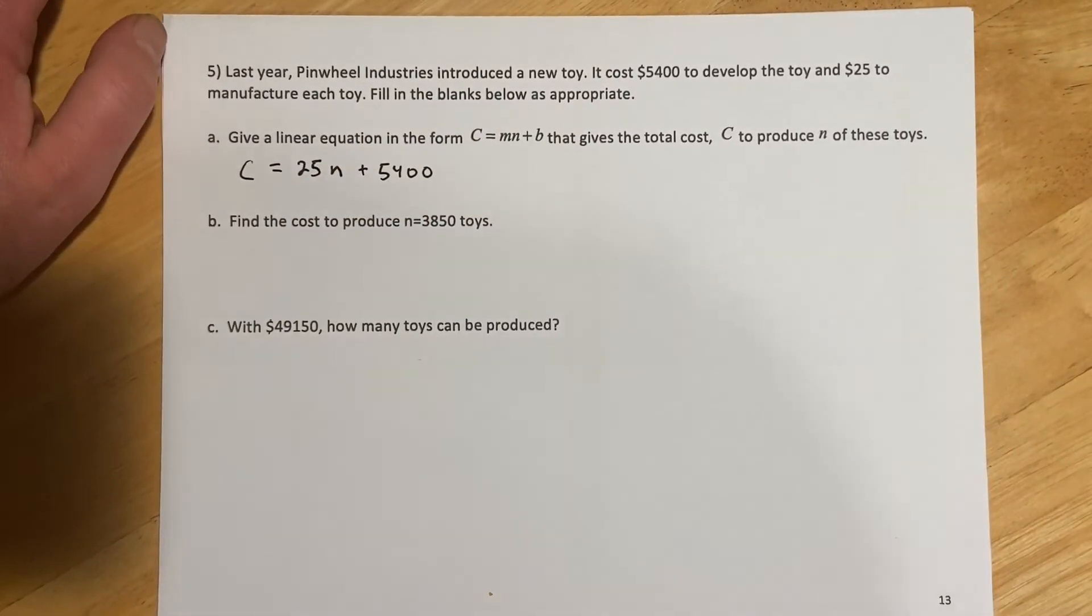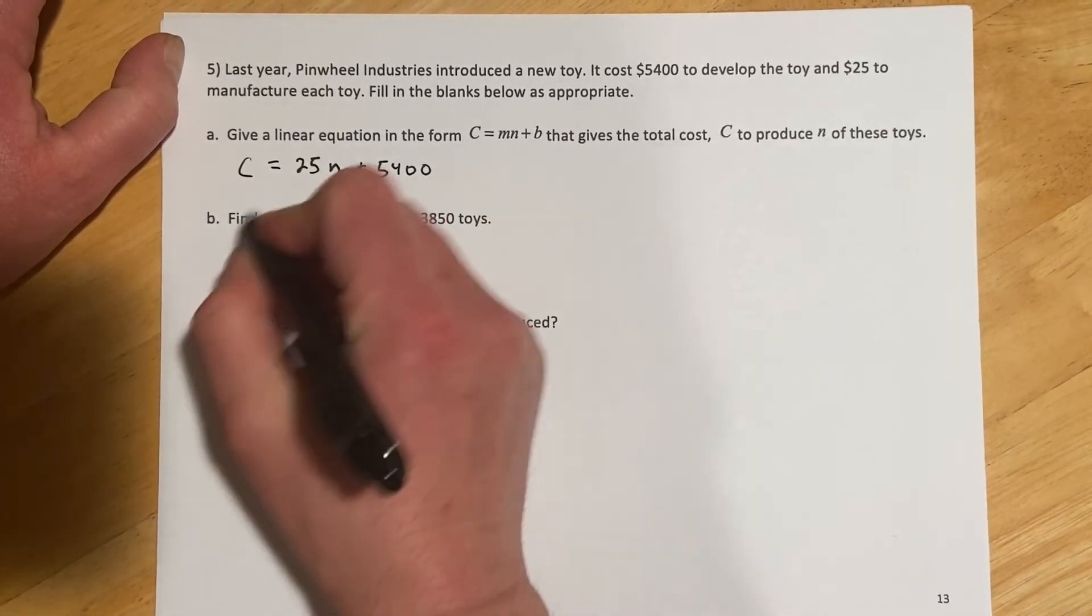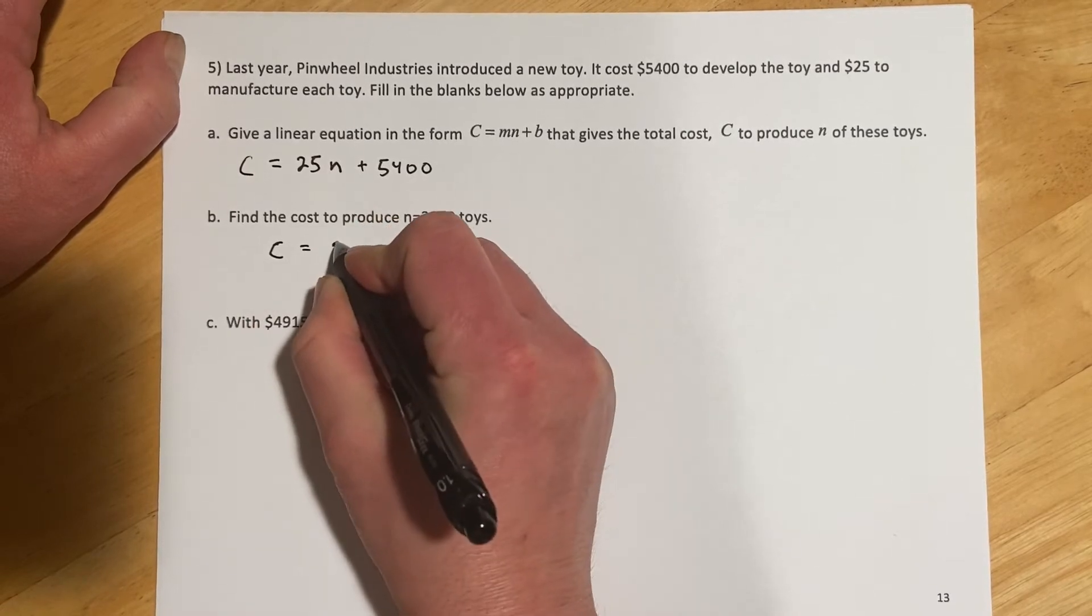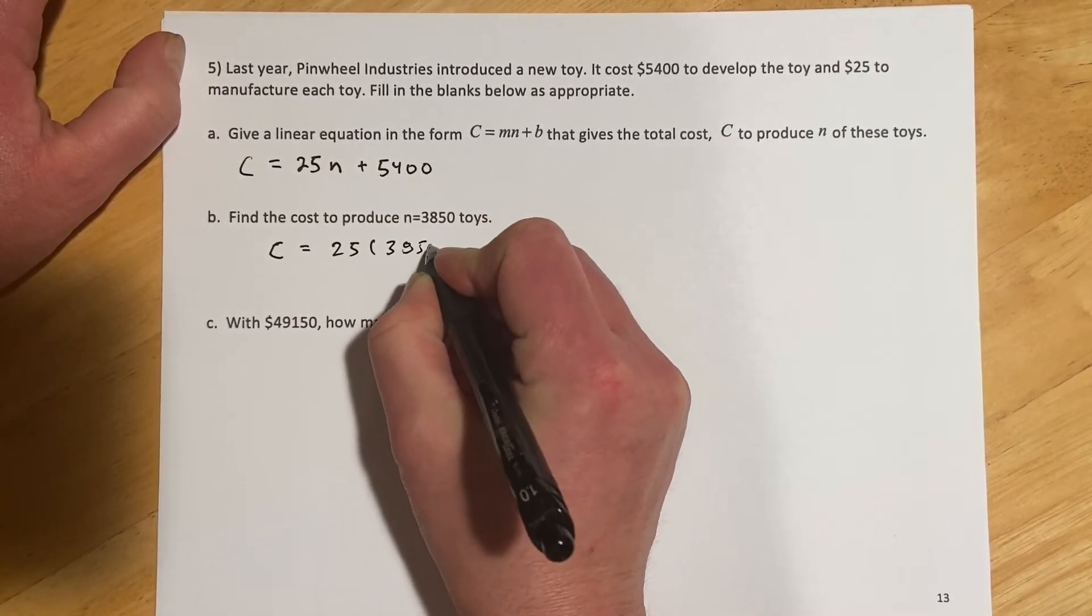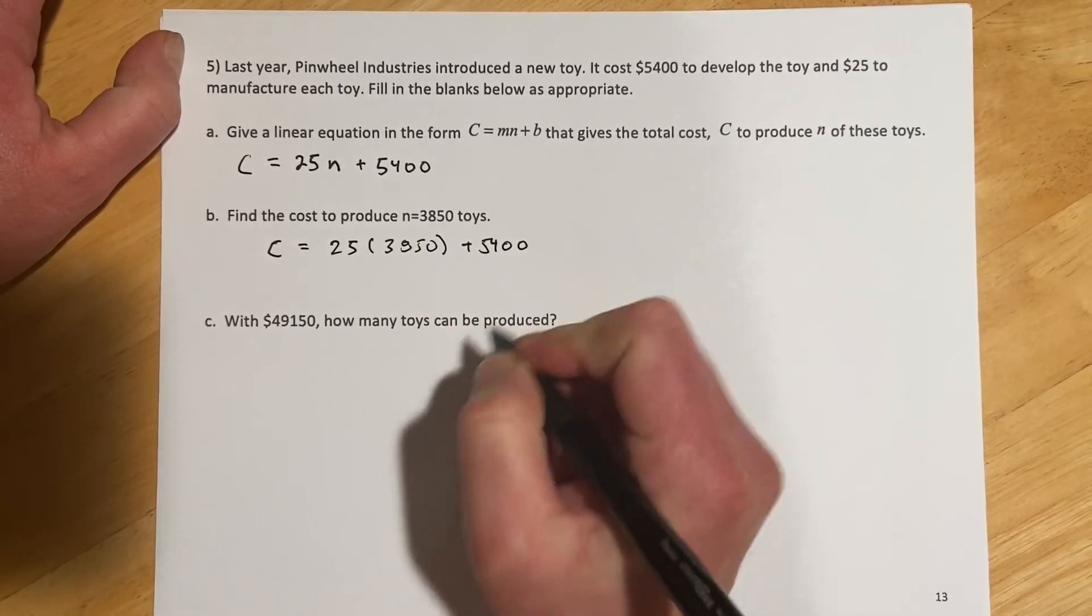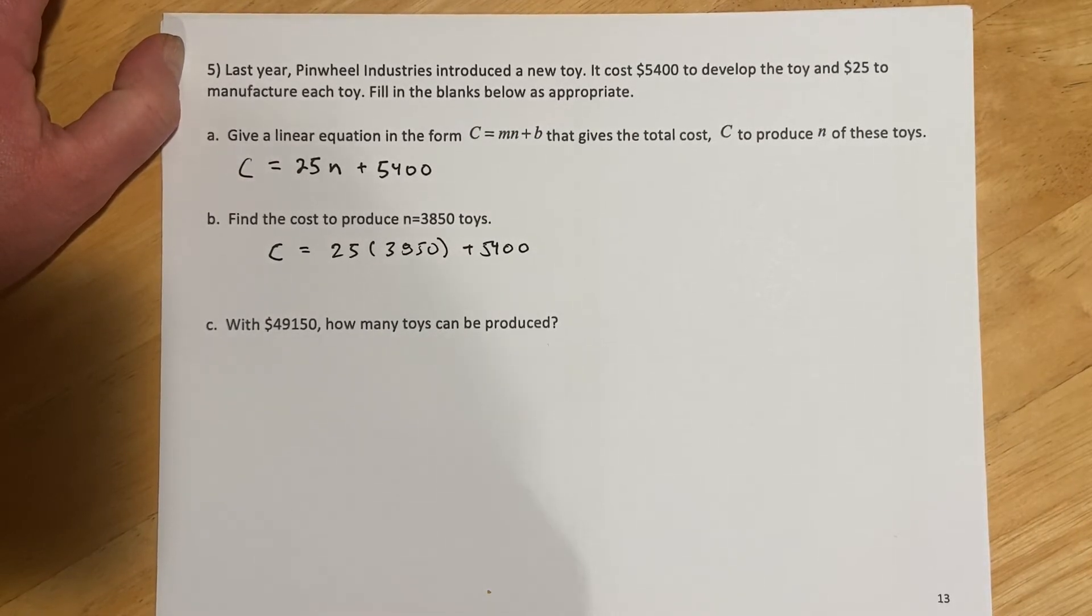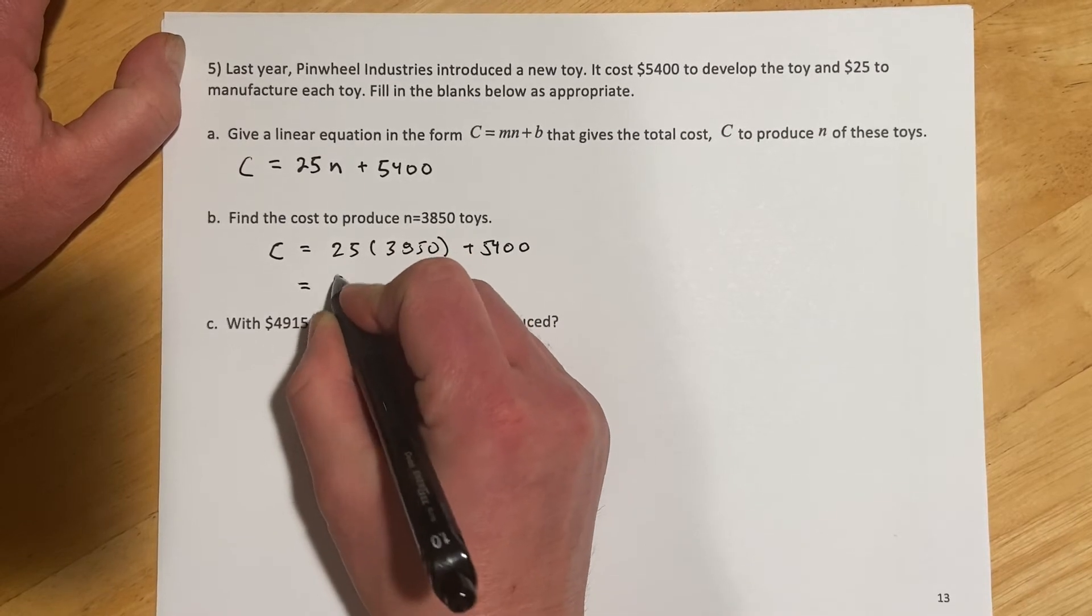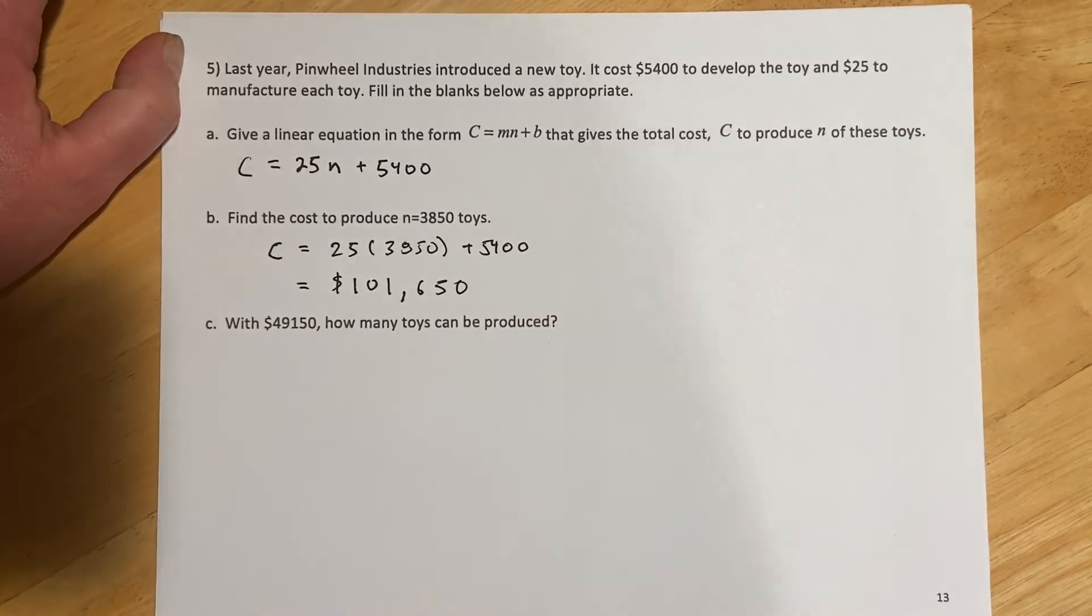Find the cost to produce 3,850 toys. So we're just going to put this in here. So our cost will be $25 times 3,850 plus $5,400. And then I just throw that in the calculator. And for that I got my cost to be $101,650.